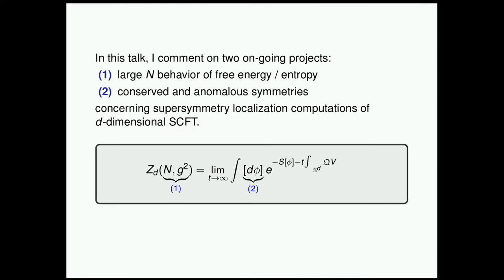The first issue is about the very old subject of large-N scaling behavior of free energies and entropy in known superconformal field theories and their avatars. The second one is an issue which many people expressed interest in at this workshop: conserved and anomalous symmetries related in the context of supersymmetric localization computation of some D-dimensional superconformal field theory. Schematically, the object I'm discussing is a partition function — and of course it also means all the correlators derived from this generating functional. The first issue is about dependence on N and some coupling constant G-squared, and the second issue is associated with the functional integral measure.